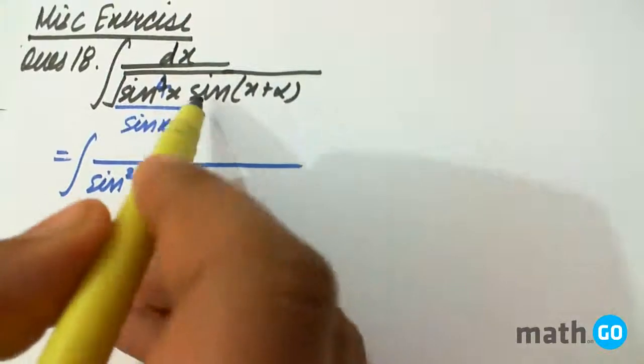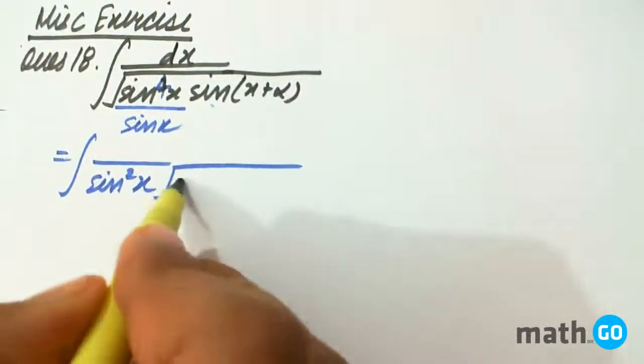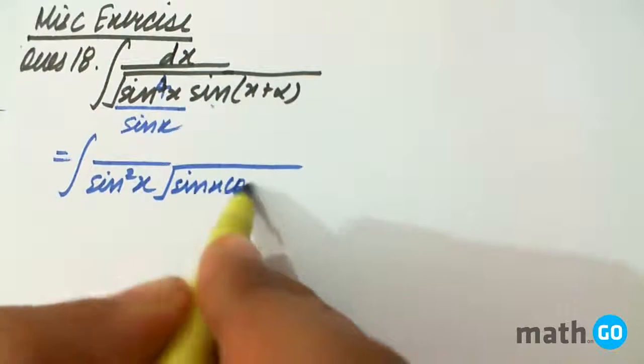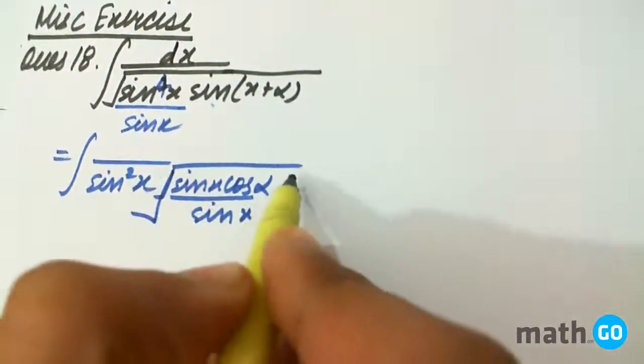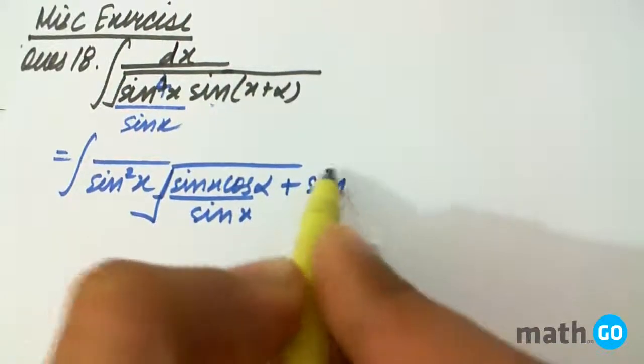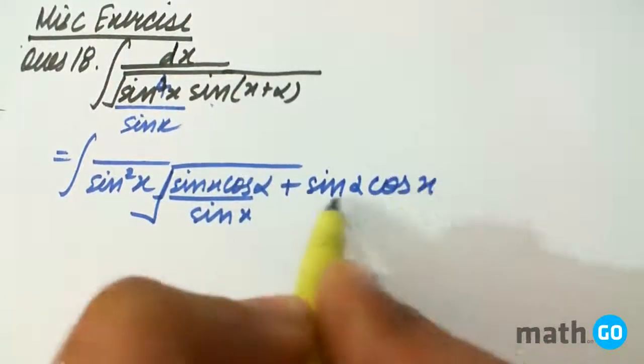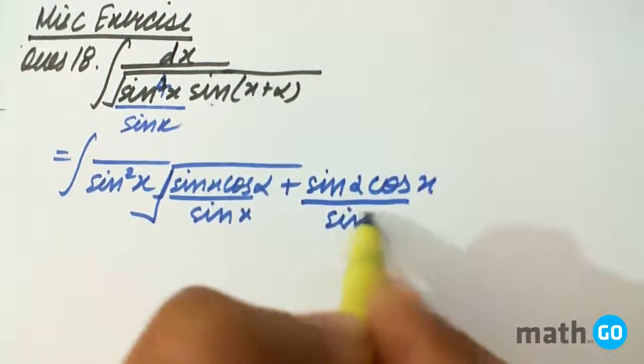And inside we apply the formula of sin a plus b. So sin x cos alpha upon sin x plus sin alpha cos x upon sin x.